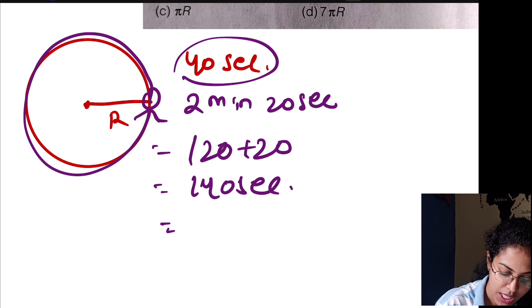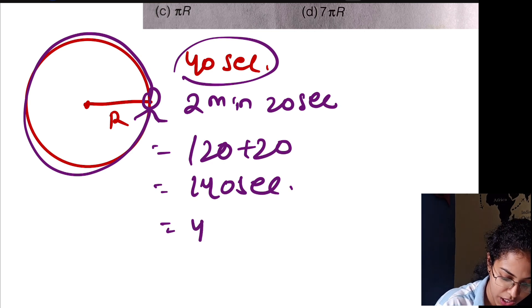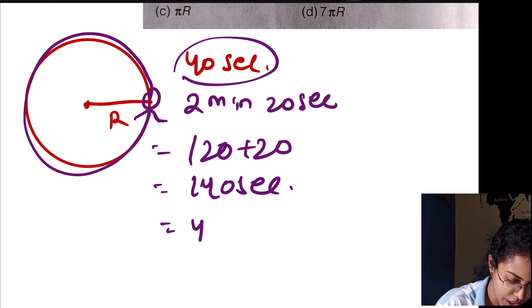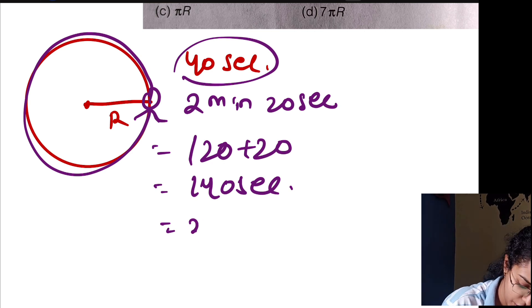At the end of 2 minutes 20 seconds: that is 3 × 40 seconds plus 20 seconds remaining.